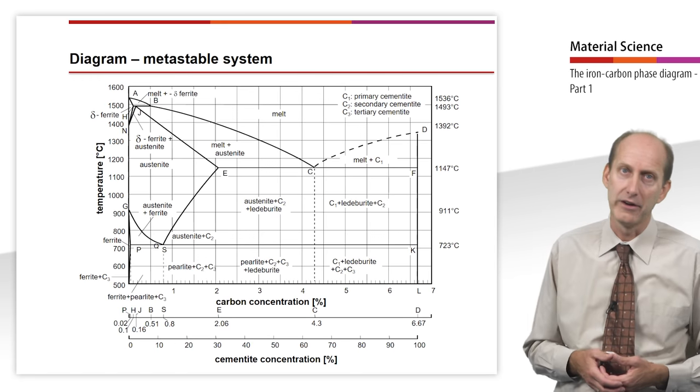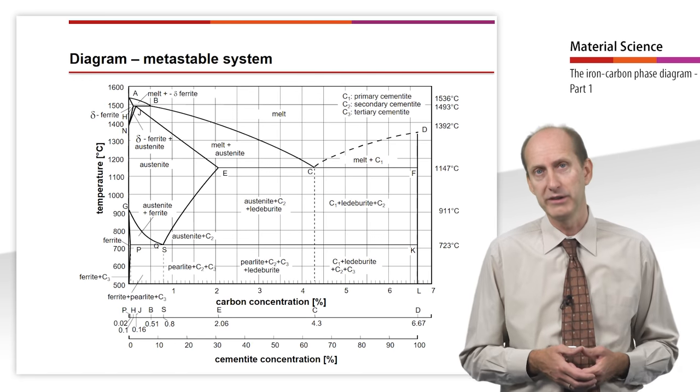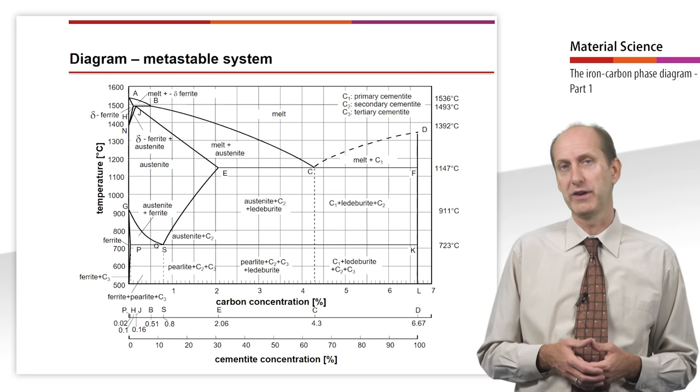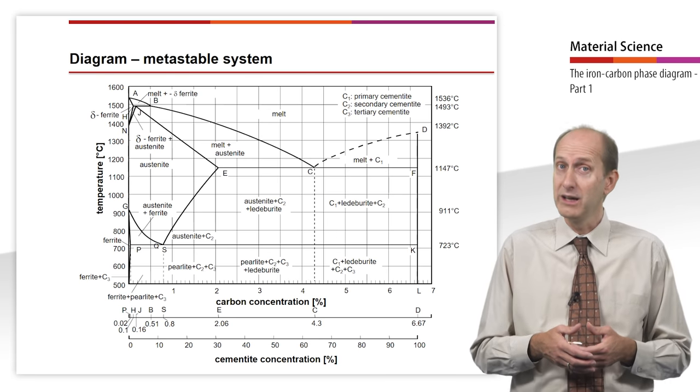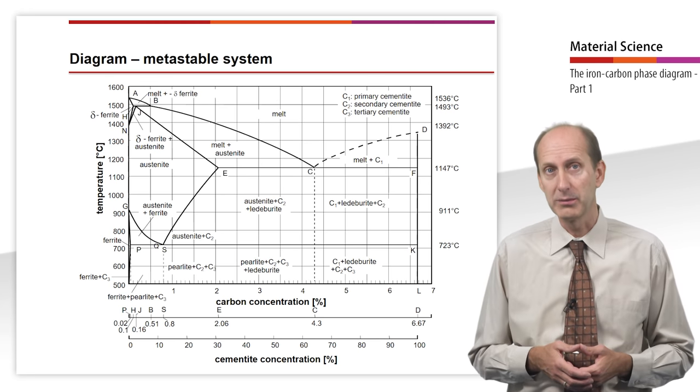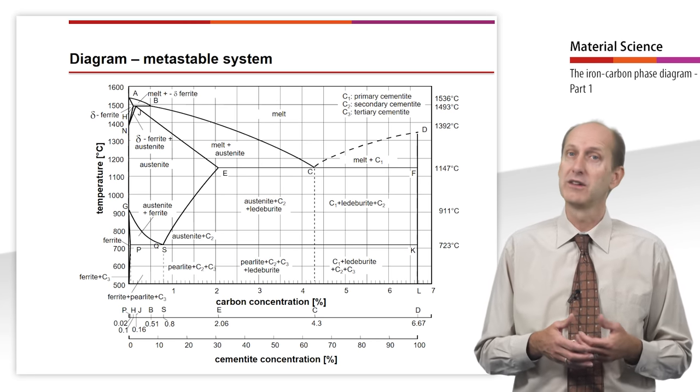When dealing with cast iron and gray cast iron in particular, we have to concentrate on the stable iron-carbon phase diagram. When dealing with steel, however, we are only interested in the metastable system of iron and iron carbide.